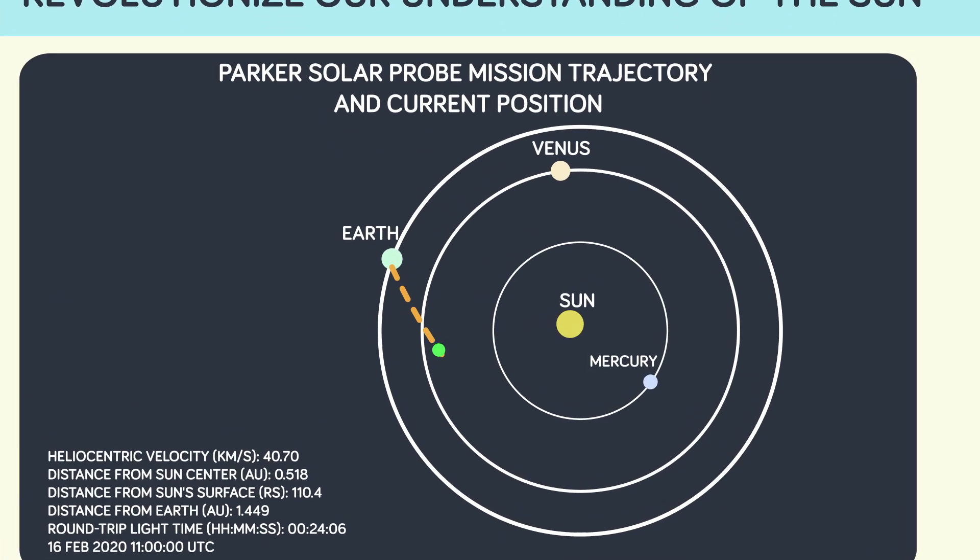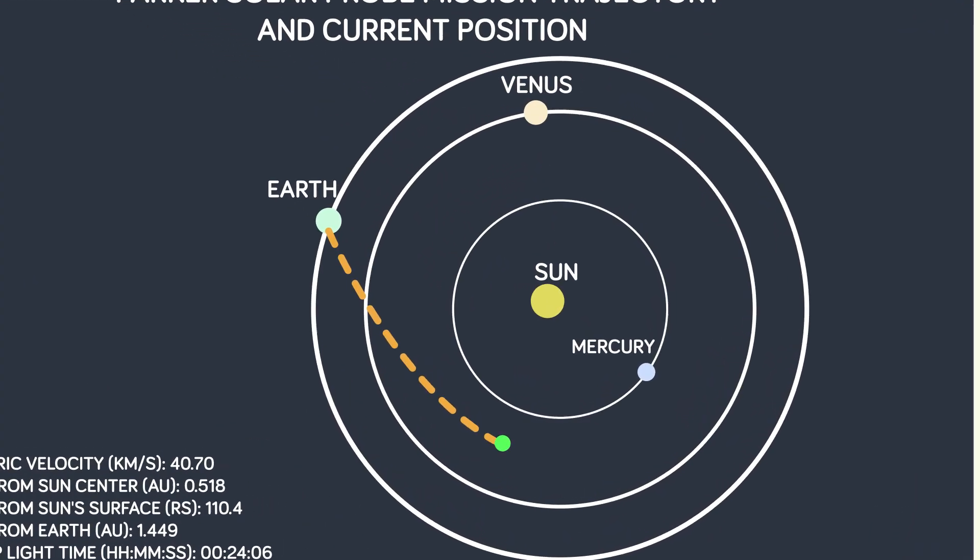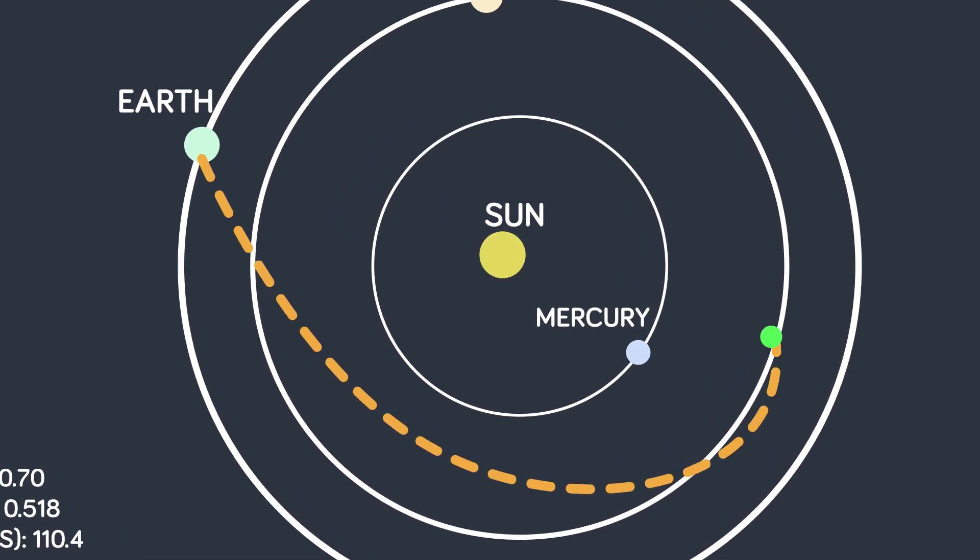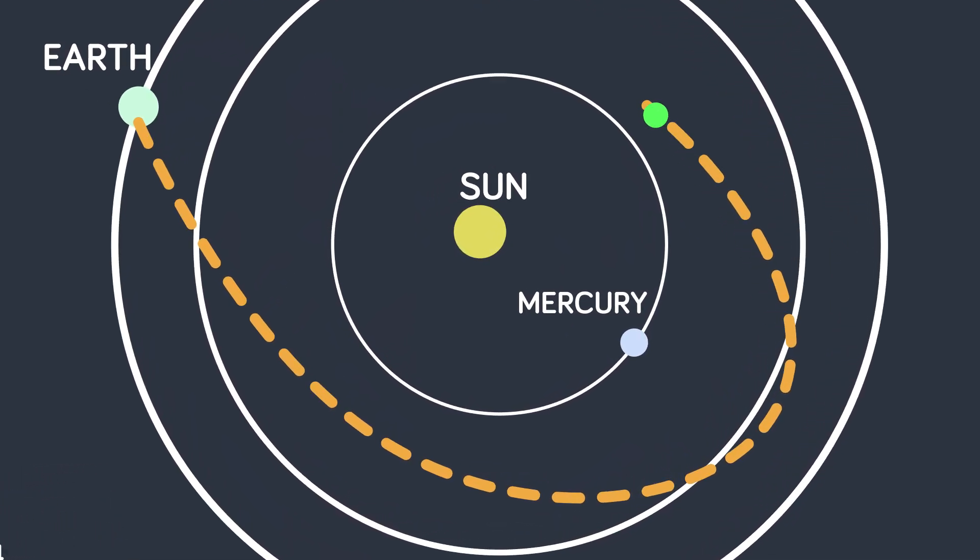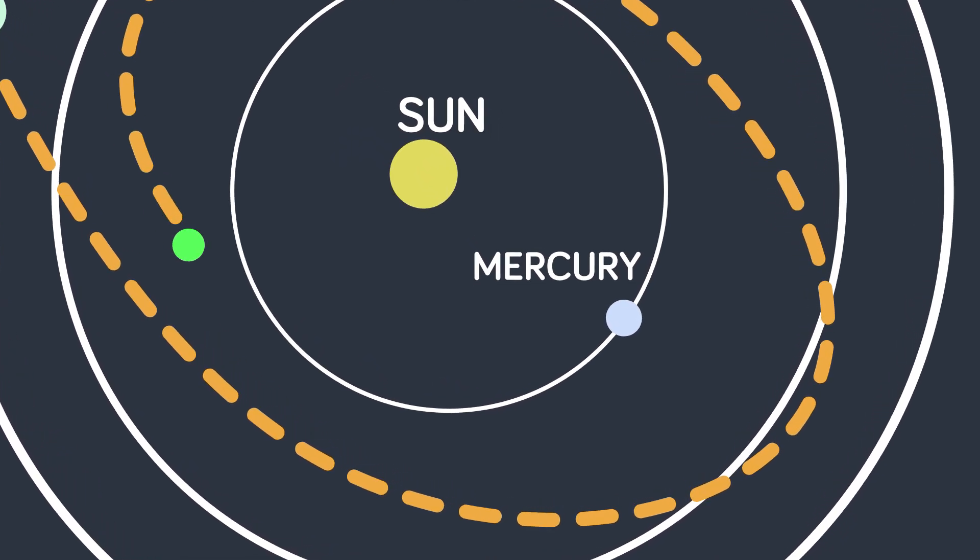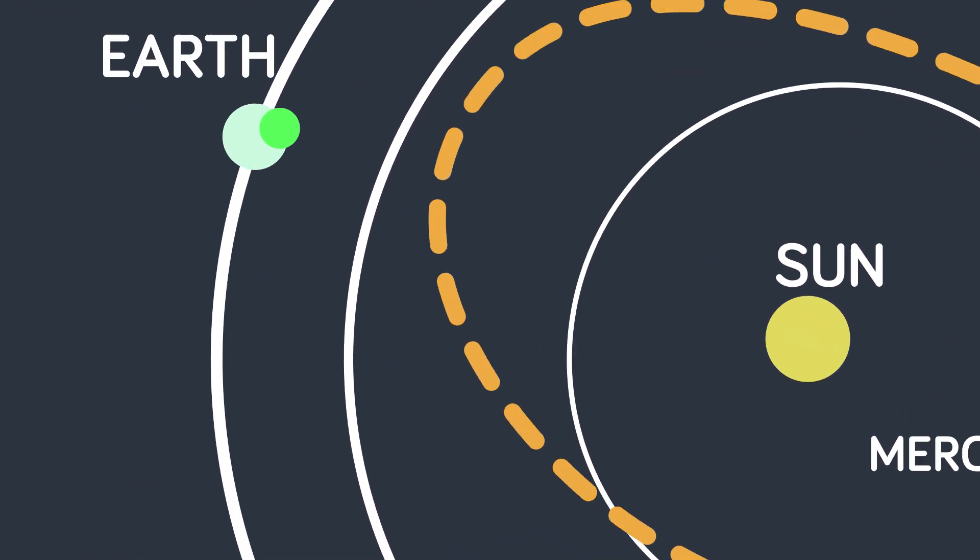But why must the probe be launched to counter Earth's orbital velocity in the first place? Well, if a probe was shot directly toward the direction of the sun, it would still retain Earth's sideways momentum, leading it to traveling in a somewhat diagonal path, missing the sun by a long shot, and most likely settling into its own independent orbit.